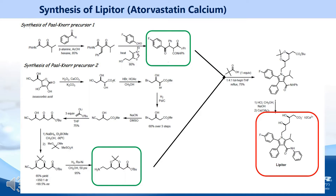Lipitor treats high cholesterol by reducing low-density lipoprotein, or bad cholesterol levels, and increasing levels of high-density lipoproteins, or good cholesterol. The synthesis of Atorvastatin begins with a 1,4-dione and isoascorbic acid, a stereoisomer of vitamin C. These starting materials are transformed to become the two precursors of Lipitor, which undergo a Paal-Knorr synthesis reaction to form a primary amine and a substituted pyrrole ring. After removing the protecting groups and adding calcium acetate, the molecule Atorvastatin calcium, or Lipitor, is formed.